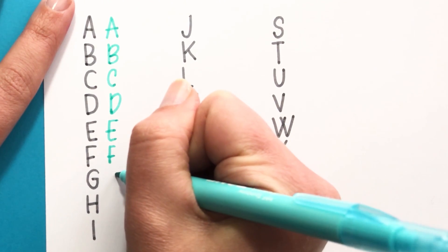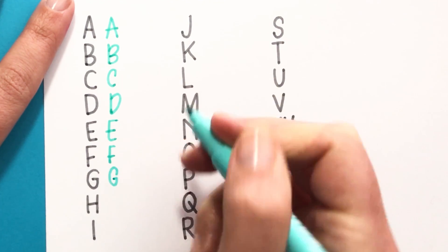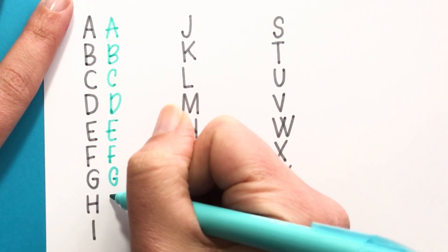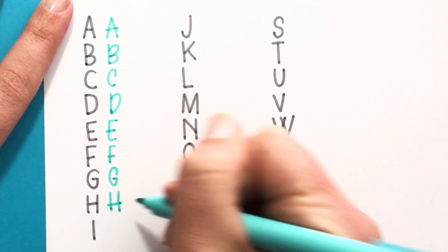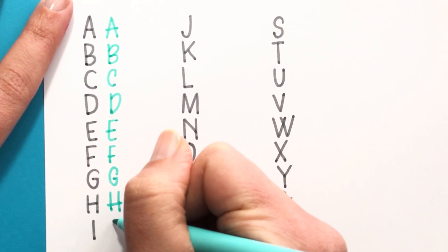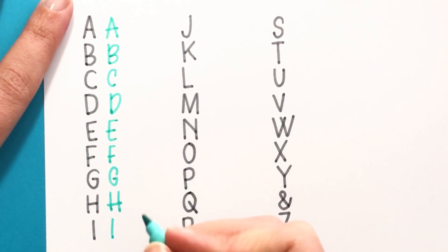Okay for the G we're going to use the same additional shade that we used on the C here on the top right and then cross it a little bit lower. Okay for the H I'm crossing lower and extending the crossbar. I is just kind of the same, you could maybe add a little bit of curve to it.